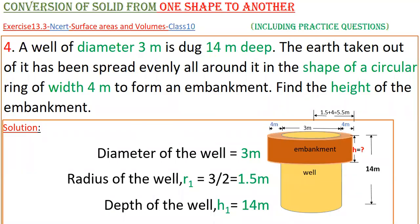Hello everyone. Today I am going to tell the solution of the fourth problem from exercise 13.3 from NCERT, surface areas and volumes, class 10. A well of diameter 3 meters is dug 14 meters deep. The earth taken out of it has been spread evenly all around it in the shape of a circular ring of width 4 meters to form an embankment. Find the height of the embankment.